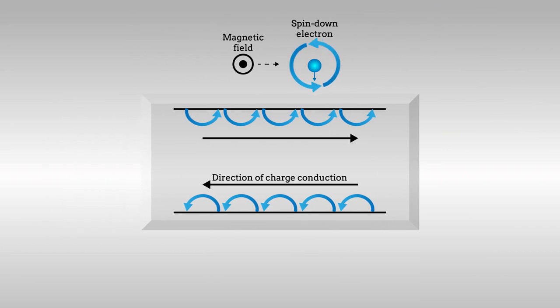Topological insulators are special materials that have the ability to conduct charge along their edges, but not through their interior. Charges are shuttled along a one-way path without bouncing off defects or impurities.